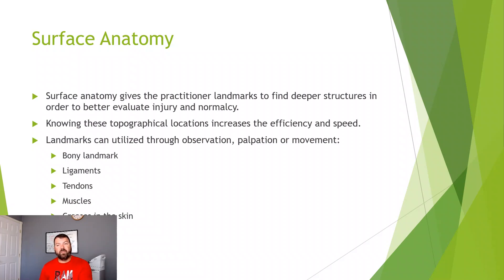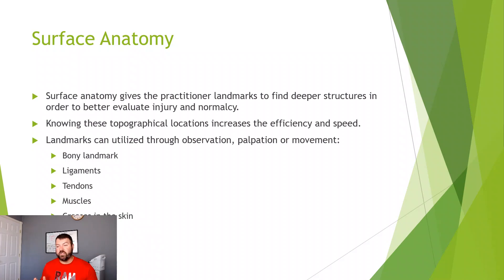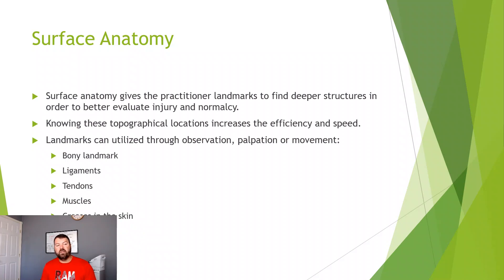For example, some people who are overweight — you may not be able to see their ankle bones on the lateral sides, so you can't use that bony landmark as a reference. Same with creases in the skin; some people make some of these very easy to find depending on the crease, and some not. So just keep a lot of these things in mind.